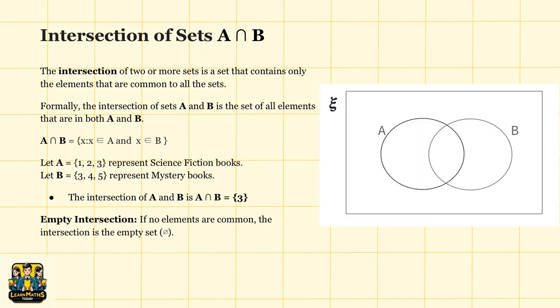Now let's move on to the intersection of sets, an important concept in set theory. The intersection of two or more sets is a set that contains only the elements that are common to all the sets. In simple terms, it's a set of items that appear in every set involved. Formally, the intersection of two sets A and B is written as A intersect B, and it includes all elements that are in both A and B.